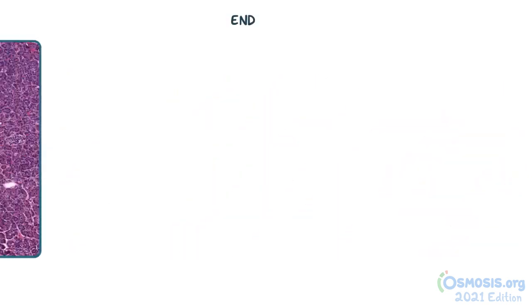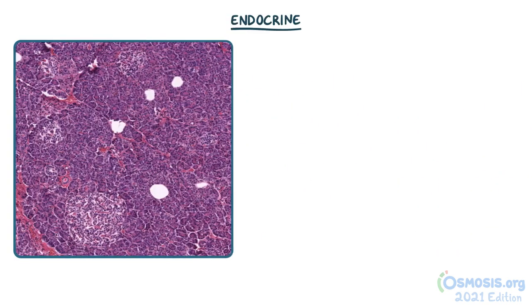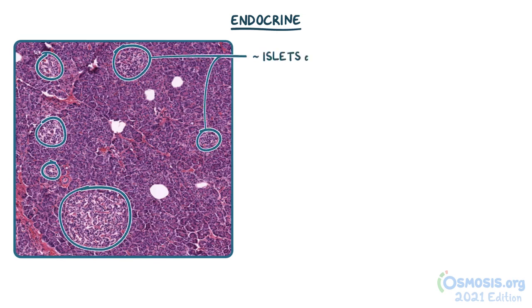Let's move on to the endocrine portion of the pancreas, which forms clusters of paler cells such as the one seen in this image, called islets of Langerhans. The overall size of the islets can vary, but they can be identified pretty easily by their lighter stain and smaller cells when compared to the surrounding exocrine tissue.